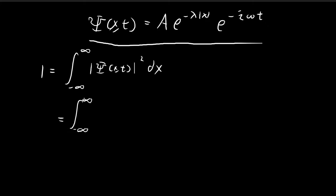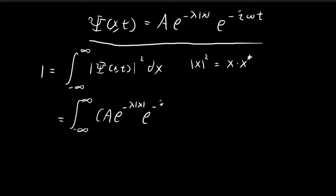We have the absolute value squared, and when we're taking the absolute value squared of a complex expression, this is equal to the complex expression itself multiplied by its conjugate. So for the absolute value squared of the wave function, I will be taking the original wave function and multiplying it by its conjugate.